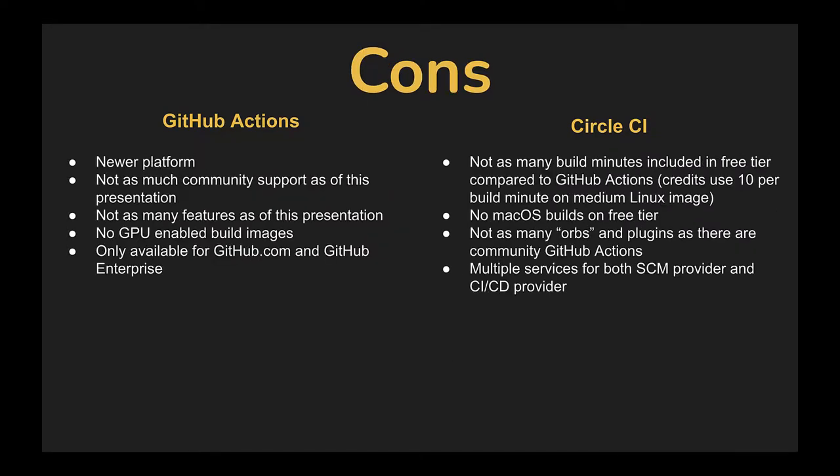As for the cons for each: GitHub Actions is a newer platform, so there's not quite as much community support or community knowledge yet, and not quite as many features built into the main framework — though that will definitely start changing quickly. They do not have any GPU-enabled build images as of this presentation, so if you need more powerful build images, CircleCI is your better bet. Also, if your source code is hosted anywhere other than GitHub.com or GitHub Enterprise, GitHub Actions will not be available to you.